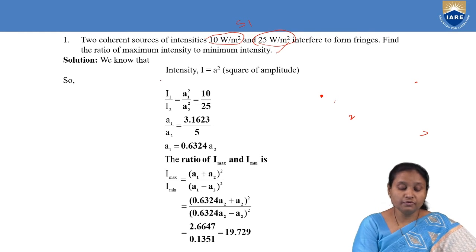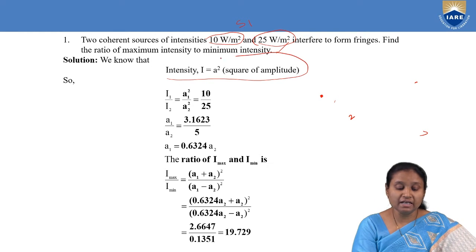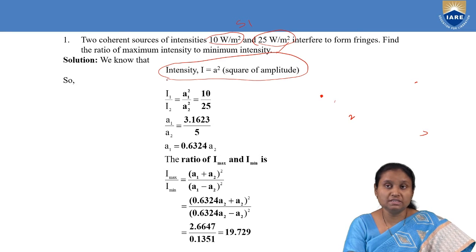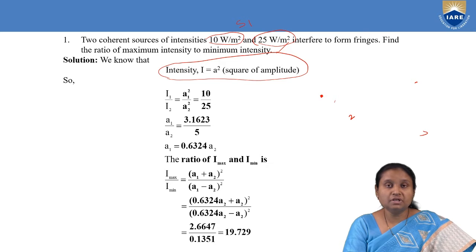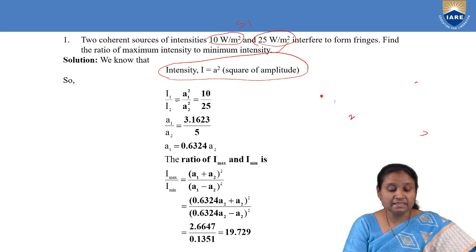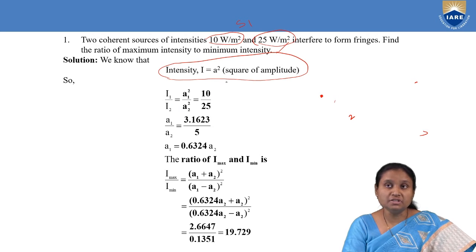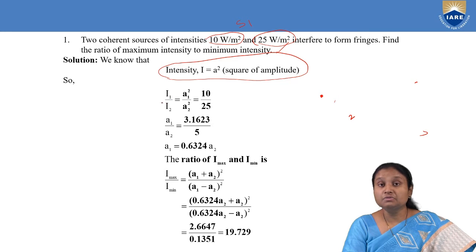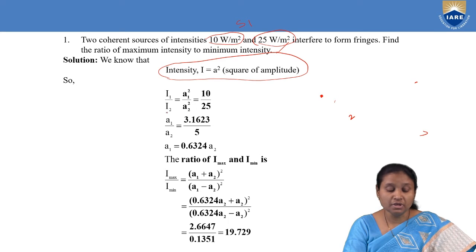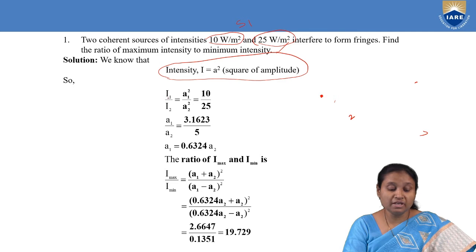In order to solve that problem, first of all we will take intensity to be the square of amplitude. Intensity I is nothing but square of amplitude. So, intensity I1 from the first source S1 gives A1 squared and I2 gives A2 squared. If we take the ratio I1 to I2, we have A1 squared by A2 squared, and we know the intensities are 10 and 25 watt per meter square.